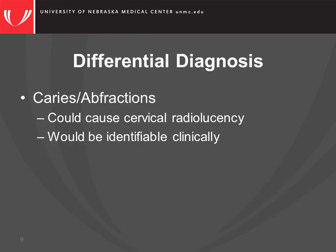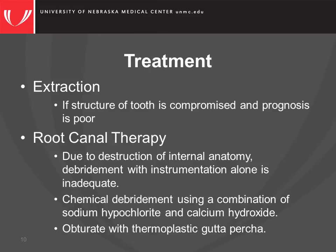The other two differential diagnoses include root caries and cervical abfraction. Both of these would show radiolucencies superimposed on the pulp space; however, different radiographic angles would show a normal pulp space. Also, caries of this extent would be detectable clinically by probing.